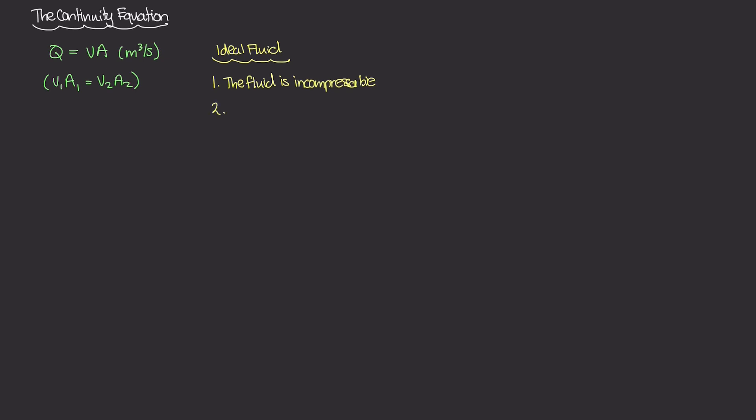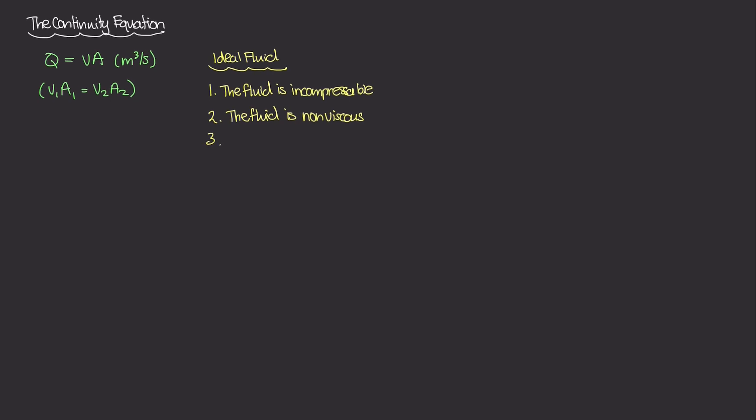The second assumption is that the fluid is non-viscous. A viscous fluid is simply one with a large resistance to flow — something like honey is very slow to flow. We're studying something like water, which is non-viscous, meaning it flows easily and quickly. The third assumption is that the flow is laminar — not turbulent, but slow, controlled, and smooth. In technical terms, the velocity of each fluid particle throughout the flow is constant; it doesn't change over time.